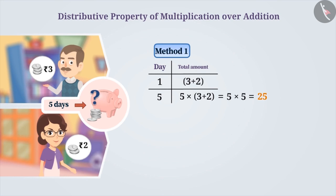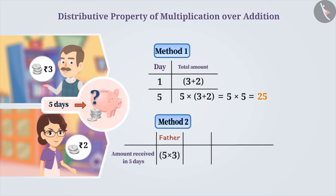Method 2: The other method is first you will find out the total amount given by your father in 5 days and the total amount given by your mother in 5 days. Now add these two values. That is, find the value of 5 into 3 plus 5 into 2. The solution is 15 plus 10 which is 25.